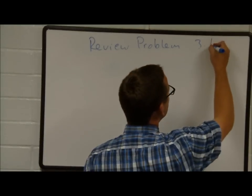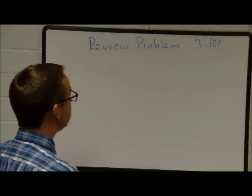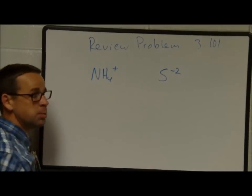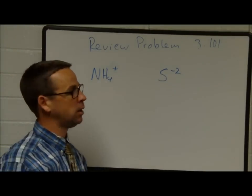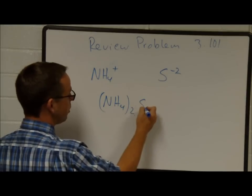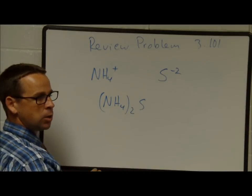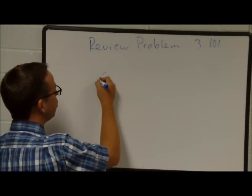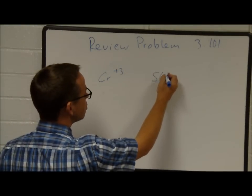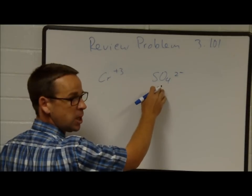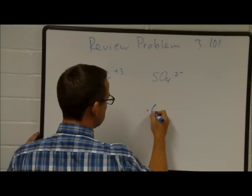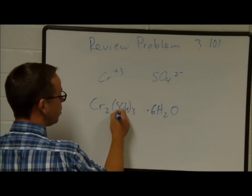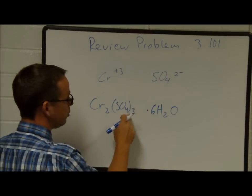Problem 3-101: Write the formula for the following. Ammonium sulfide: NH₄⁺ is plus 1, sulfide (S²⁻) is minus 2, so we need two ammoniums: (NH₄)₂S. Chromium 3 sulfate hexahydrate: Cr³⁺ is plus 3, sulfate (SO₄²⁻) is minus 2, giving us Cr₂(SO₄)₃·6H₂O. Silicon tetrafluoride: molecular compound, SiF₄.